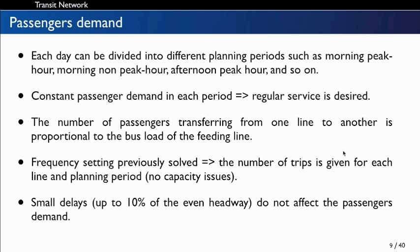Another assumption is that the number of passengers transferring from one line to another is proportional to the bus load of the feeding line. For example, if 10% of passengers transfer and the bus load is 50 passengers, only five passengers will transfer. An important assumption is also that the frequency setting problem is previously solved, so the number of trips for each line and each planning period is a given parameter.